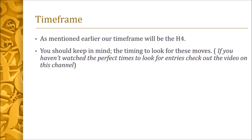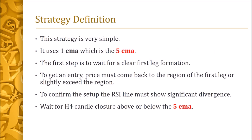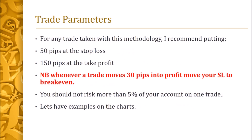Our time frame will be the H4. Keep in mind the timing to look for these moves. Here is the strategy definition: this strategy is very simple and uses one exponential moving average, which is the 5 EMA. The first step is to wait for a clear first leg formation. To get an entry price, the price must come back to the region of the first leg or slightly exceed that region. To confirm the setup, the RSI line must show significant divergence. Wait for H4 candle closure above or below the 5 EMA. For any trade taken with this methodology, I recommend putting the stop loss at 50 pips and the take profit at 150 pips.